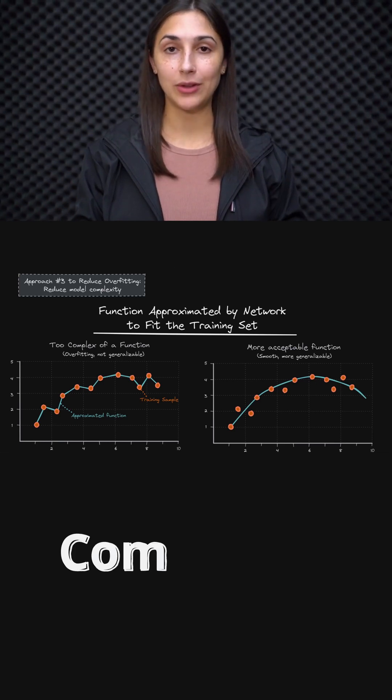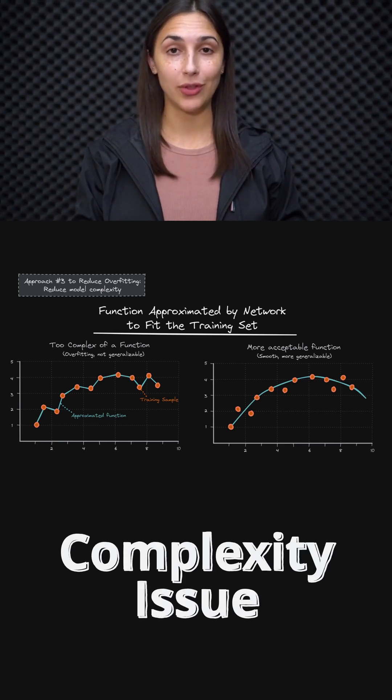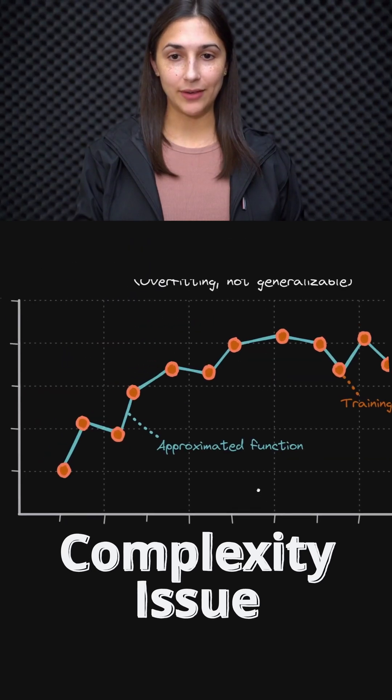Sometimes we might have a model that's just too complex for the data that we expect it to be able to generalize on. Let's zoom in on this graph on the left here to explain this idea.